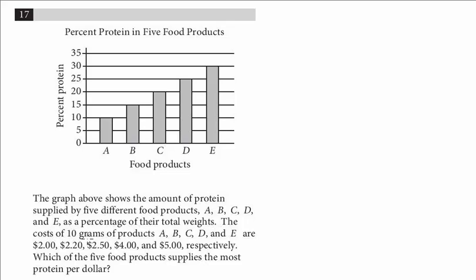The cost of 10 grams of products A, B, C, D, and E are $2, $2.20, $2.50, $4.00, and $5.00, respectively. Which of the five food products supplies the most protein per dollar?